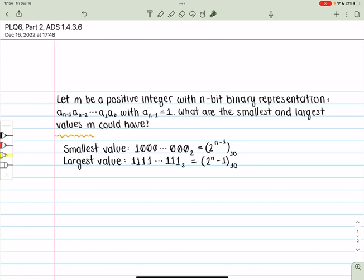let m be a positive integer with n-bit binary representation in the form of a_(n-1), a_(n-2), dot dot dot, a_1, a_0, with a_(n-1), so this first bit being a 1. What are the smallest and largest values that m could have?